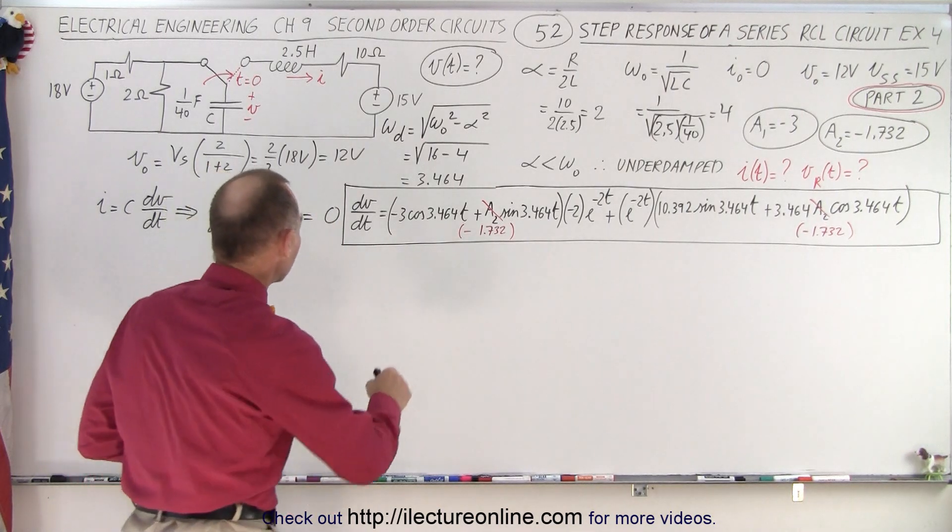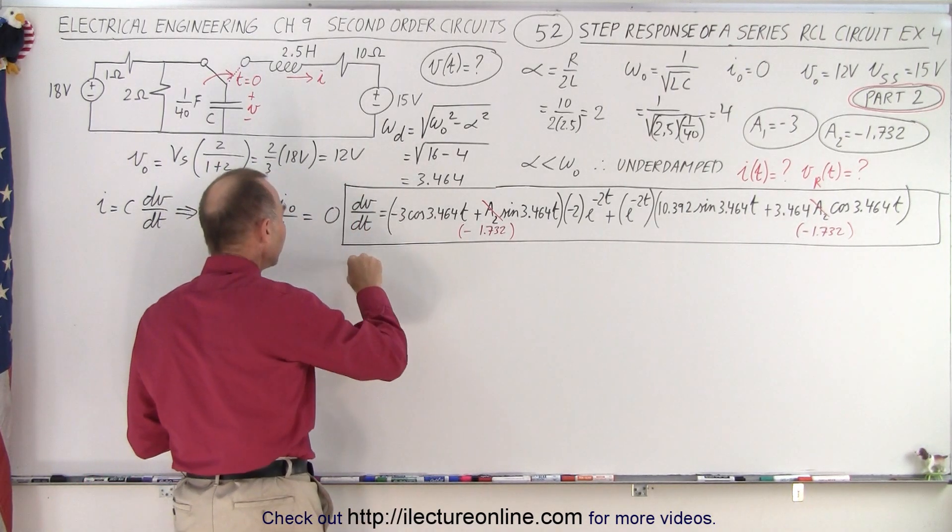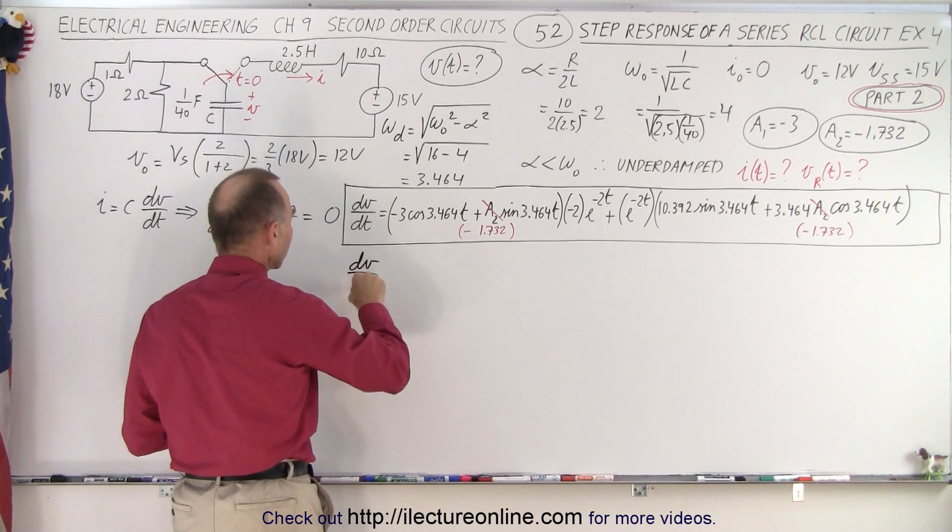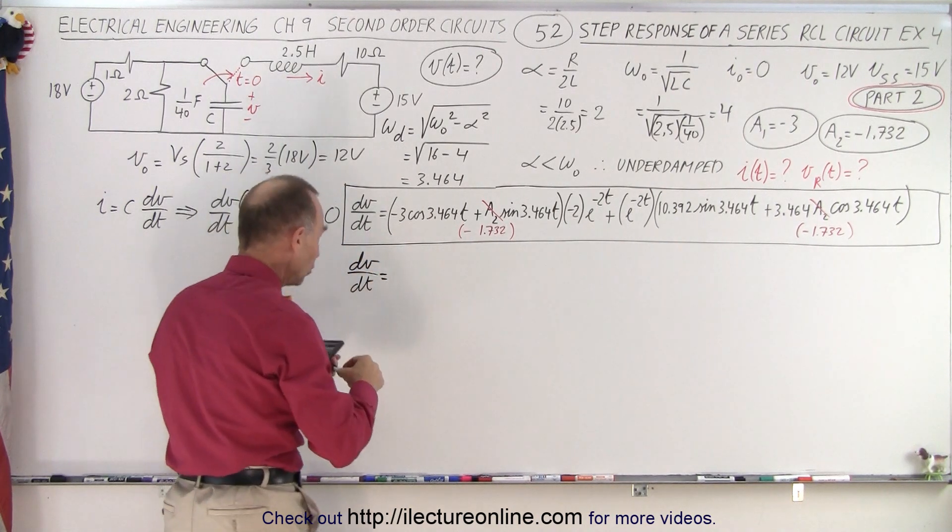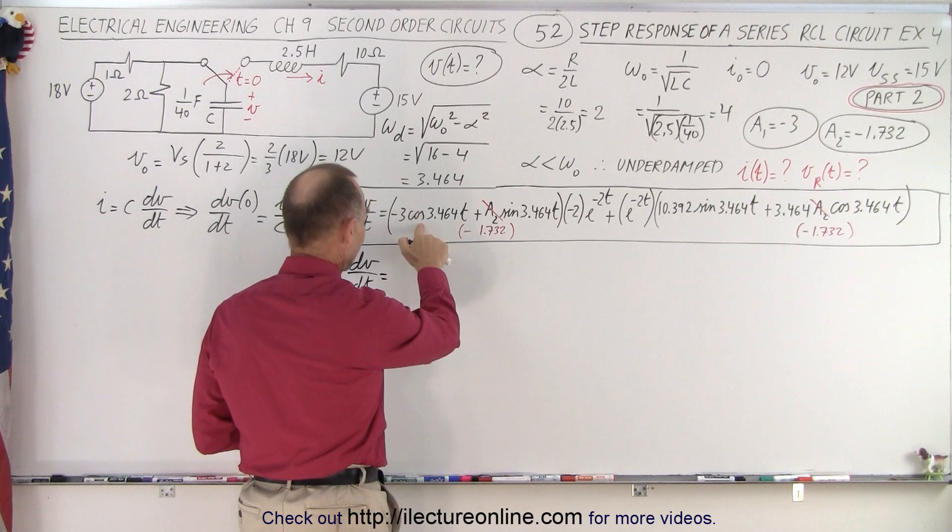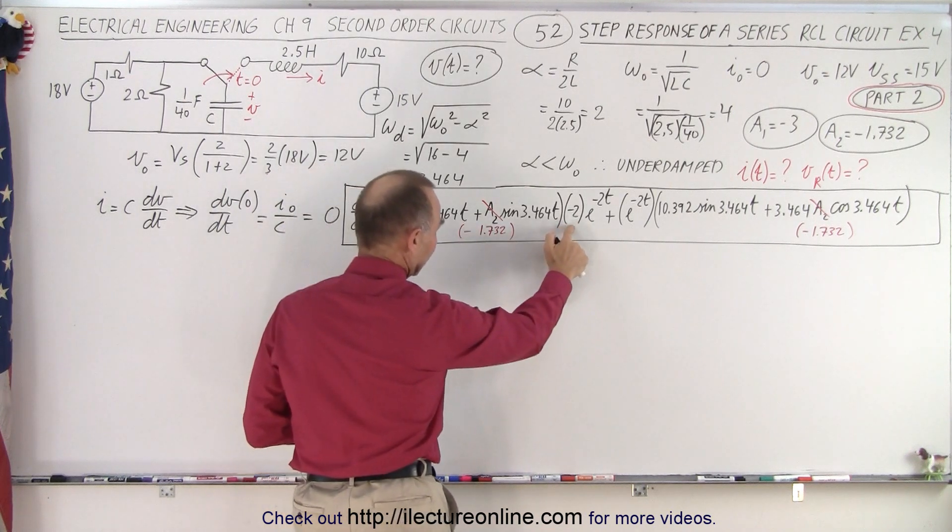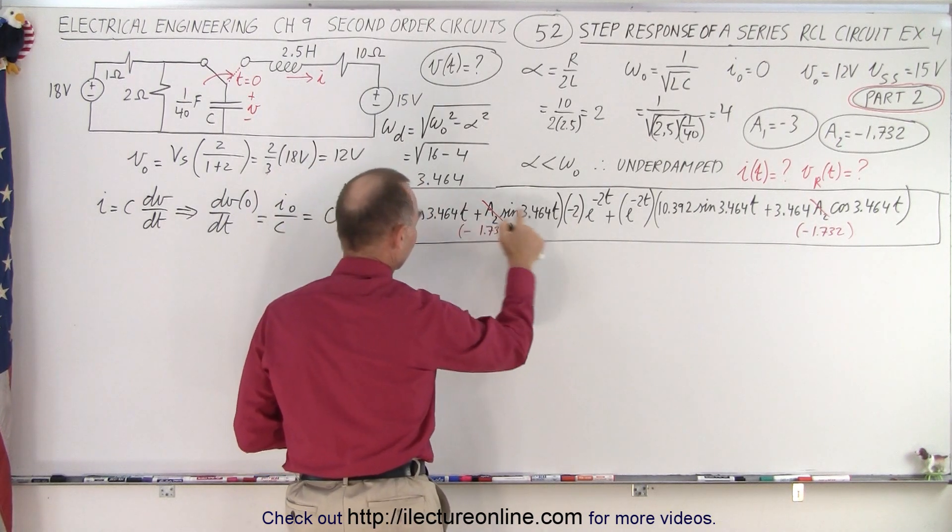First of all, the cosine term. We can write dv/dt is equal to... we have minus 3 times cosine, but we have to multiply that by minus 2, which gives us positive 6. And then over here, the cosine term,